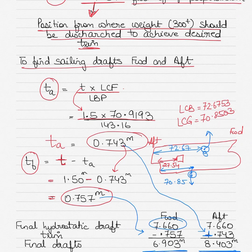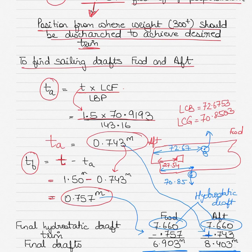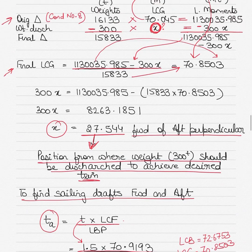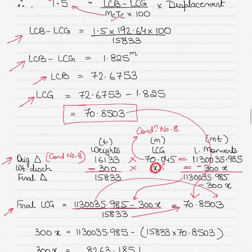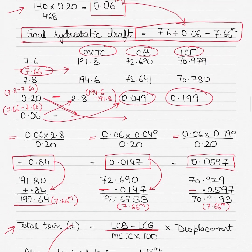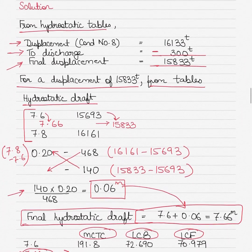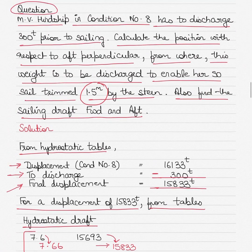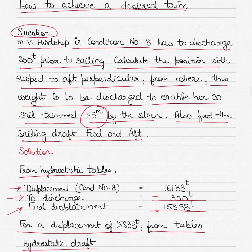The hydrostatic draft of 7.66 meters is your baseline. Apply the corrections — add the aft correction and subtract the forward correction — to get the final sailing drafts. I hope you understood the solution. Let me know if you have any doubts in the comment section. Keep watching the videos and let me know whether they are helpful for your exams.